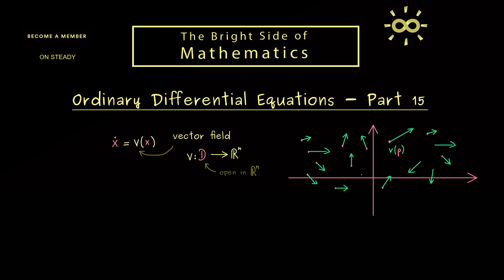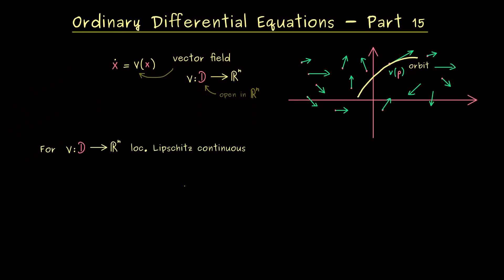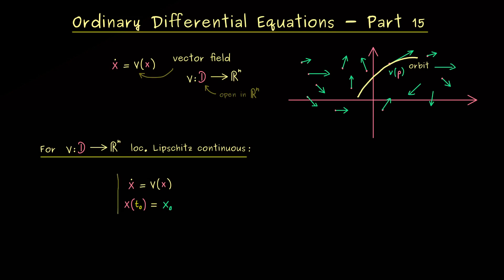Moreover, we also learned that an orbit is simply a curve inside here that is tangent to our vectors — it's the image of a solution for our ordinary differential equation. And now since we have discussed solutions in a general sense before, we can apply this knowledge to orbits. The only restriction we want to put in is that v is a locally Lipschitz continuous function, because then we have our famous uniqueness and existence result for the initial value problem.